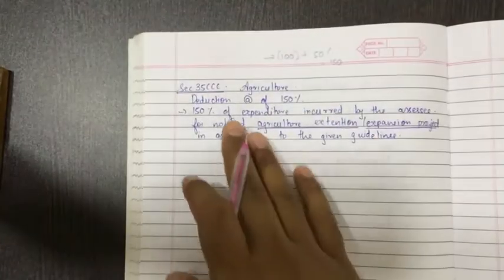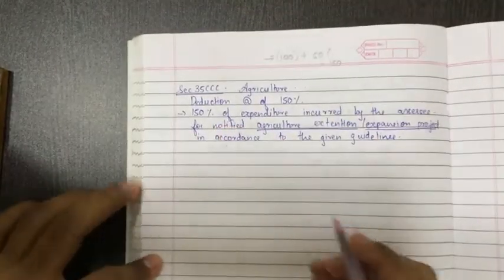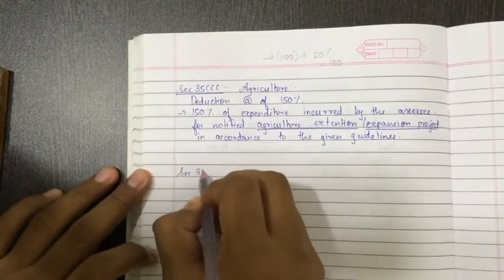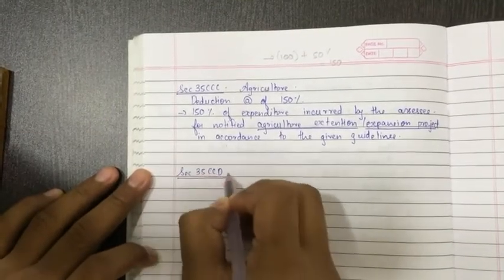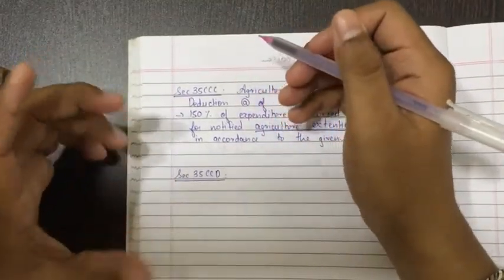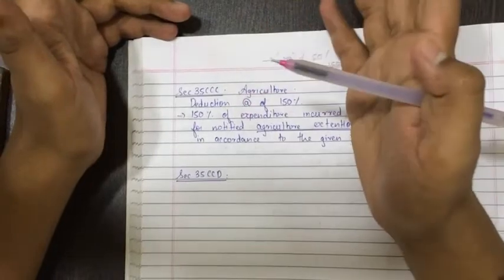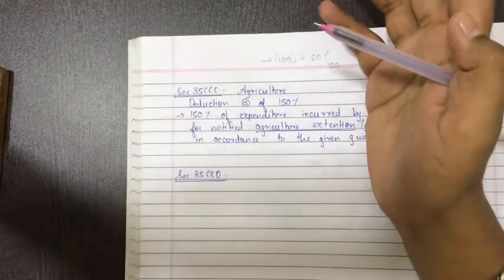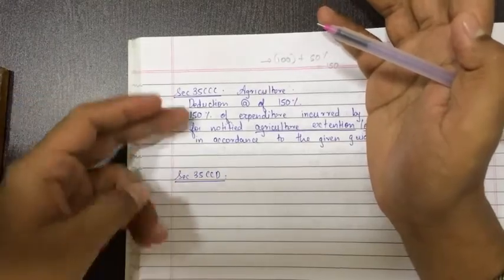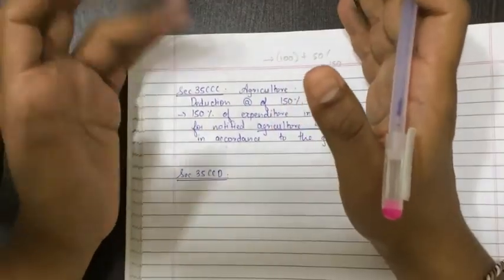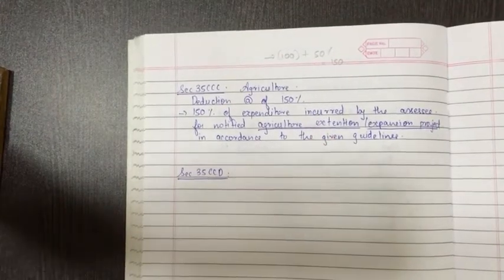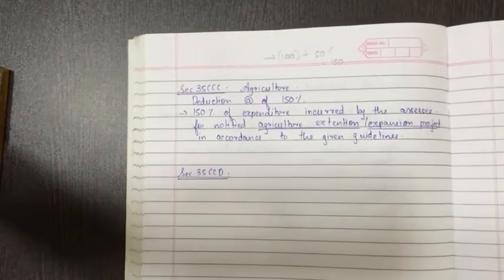I hope Section 35CCC is clear. Now let me move to Section 35CCD. Here I can't make anything simple. You have to remember few sections. In my previous lectures I made few sections so that it might register in your brain and you remember it. But now you have few, hardly 10 to 15 sections will be there. You have to memorize it. There is no other option. I'm sorry for that.